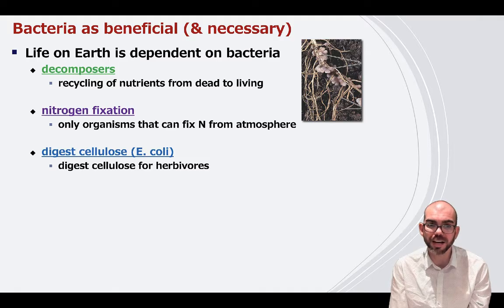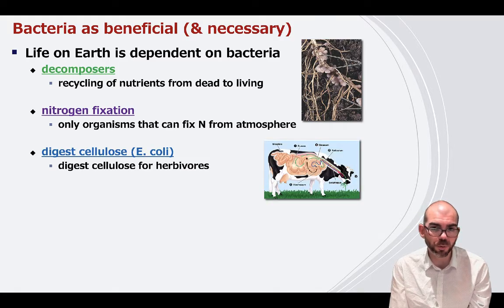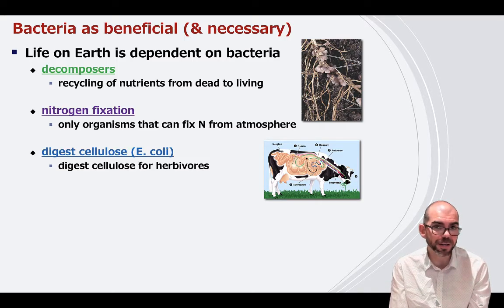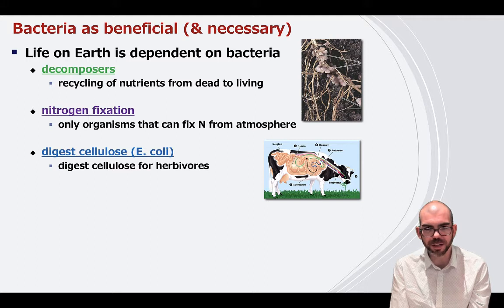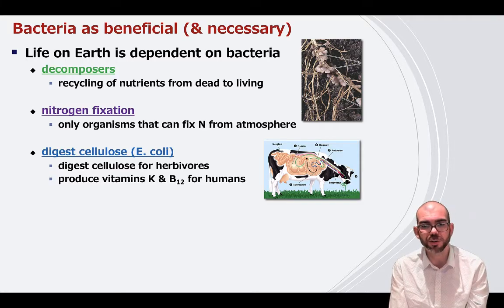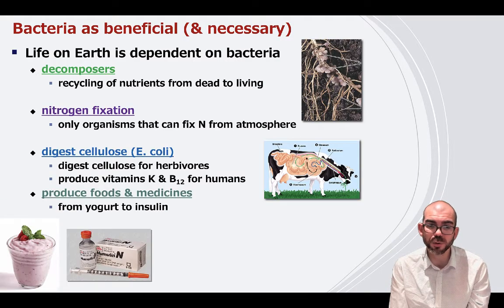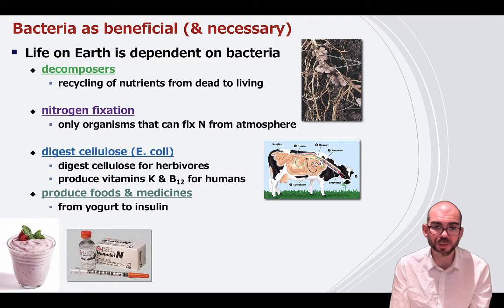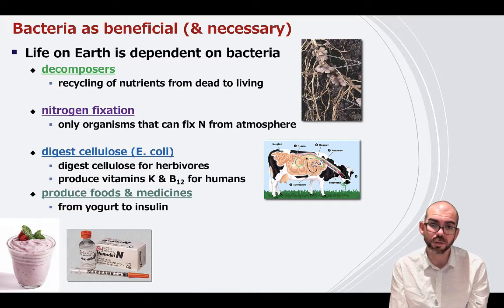Bacteria also help living things digest. If you're an herbivore, you can't directly digest the cellulose in plant cell walls on your own — you need bacteria in your stomachs to break it down, as it's too sturdy a molecule. That action breaks cellulose down to a small enough molecular level for the herbivore to extract energy from it. This is also how vitamins like potassium and B12 are obtainable for humans. They're also used to produce foods and medicine, from yogurt to genetically modified bacteria making insulin for people with diabetes.